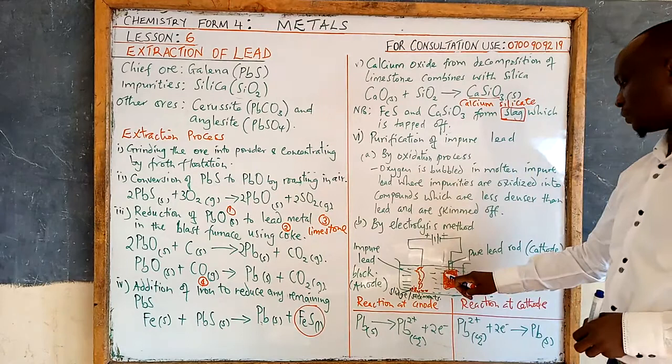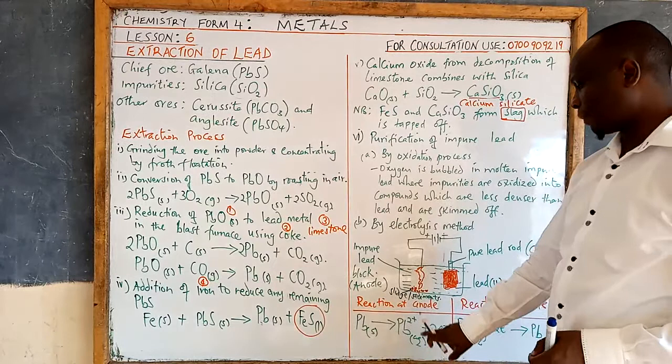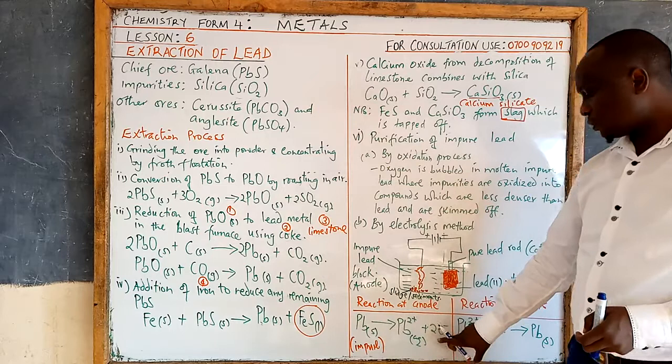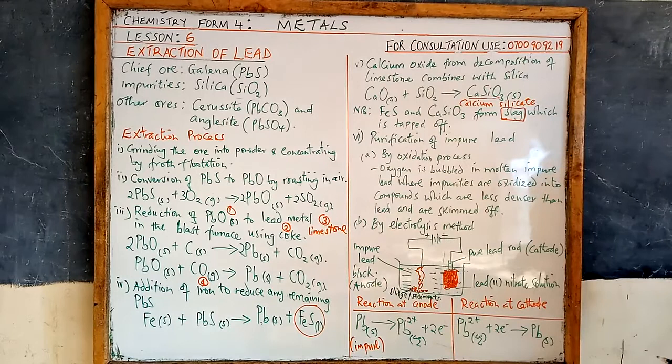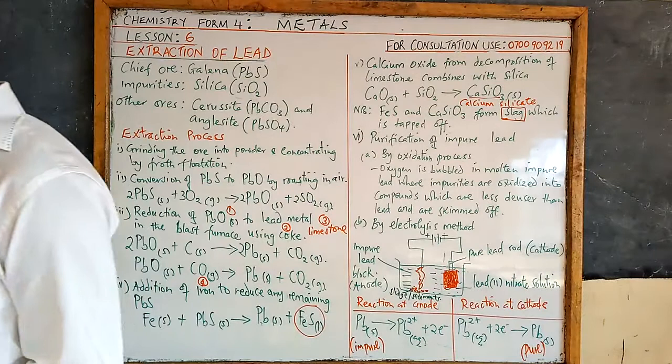The lead atoms at the anode lose electrons, go into solution as ions, and the ions from the solution gain electrons and are deposited on the cathode as lead solid. This will be pure lead. This is how the purification process is done.